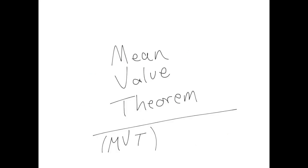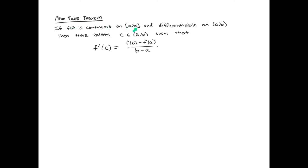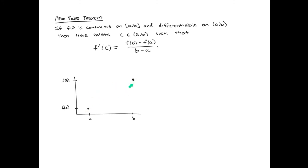The final theorem is the Mean Value Theorem. The hypothesis is that it's continuous on the interval including a and b, and differentiable on the interval not including the endpoints a and b. As long as those two things are true, the conclusion is that there must exist some x = c value in between a and b such that the slope of the tangent line at x = c equals the slope of the secant line between x = a and x = b. Let's look at a picture. In the MVT, we do not necessarily have f(a) = f(b).